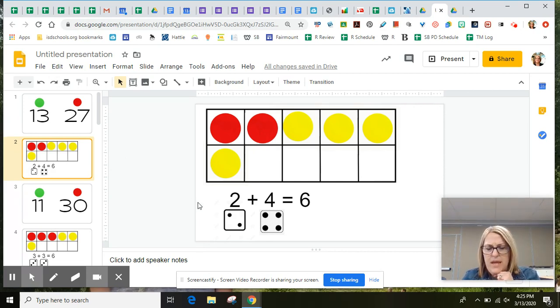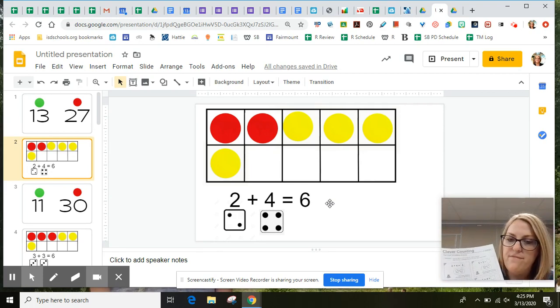I wonder how many that makes. Two and four is the same as six. Now, today you're going to have a paper that looks just like this. The first problem you see has two and four is the same as six.